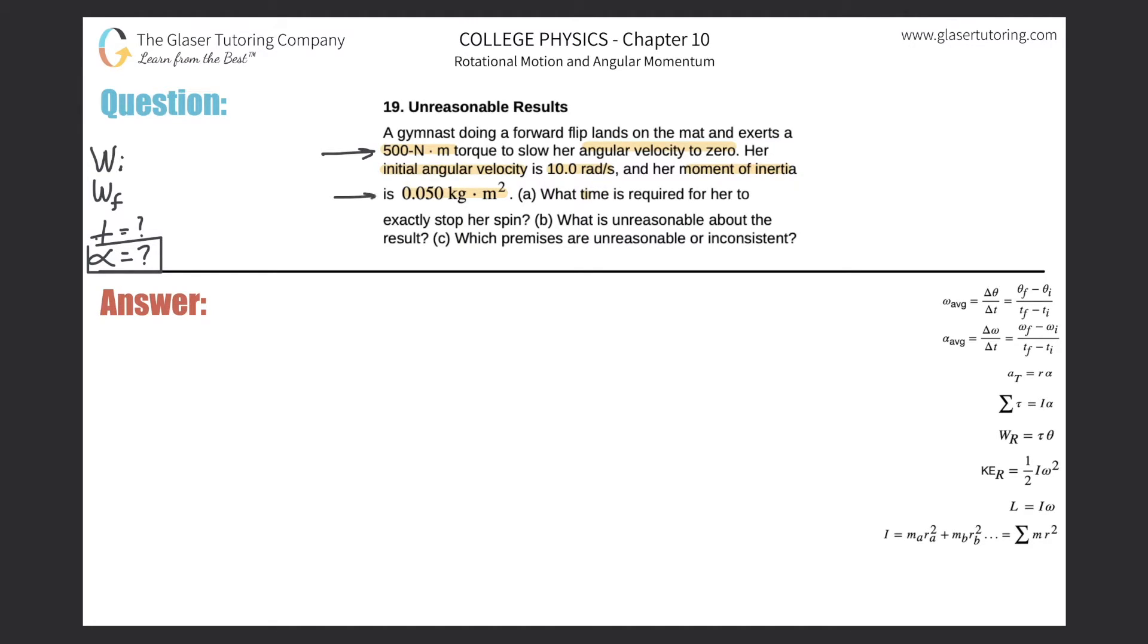Well, it doesn't tell that to me directly, but it does give me a torque in the problem and it also gives me the gymnast's moment of inertia. Therefore I can use this formula over here on the right hand side to find the angular acceleration. It says that the sum of the torques is equal to the moment of inertia multiplied by angular acceleration.